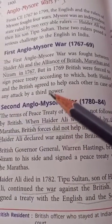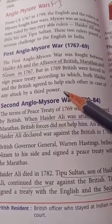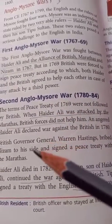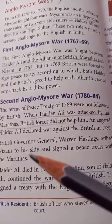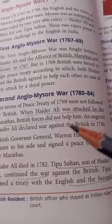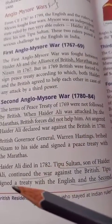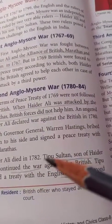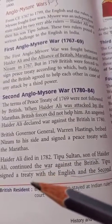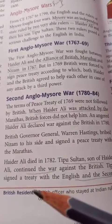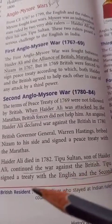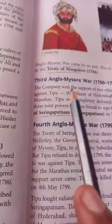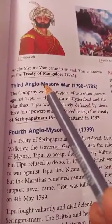According to the above treaty, the British were supposed to help Mysore, but they did not. Contrary to this, the British signed a treaty with the Marathas and Nizam. By that time, Haidar Ali died in 1782 and Tipu Sultan became the ruler of Mysore. He continued the war against the Britishers, but Tipu signed a treaty with the English in the second Anglo-Mysore war, known as the Treaty of Mangalore.